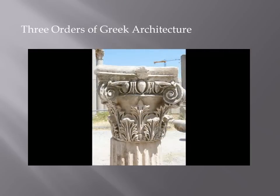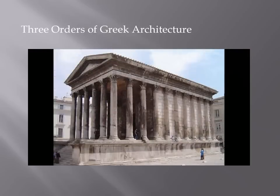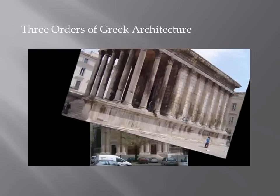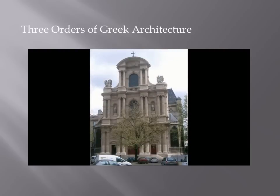The shaft of the Corinthian order, like the Ionic, typically has 24 flutes, and the column is usually a little bit higher than either the Doric or Ionic — typically about 10 diameters high. One last thing worth mentioning is this church, remarkable in that it actually shows all three orders of classical Greek architecture on different levels: the columns on the ground floor are Doric, the second level Ionic, and then on top, Corinthian.